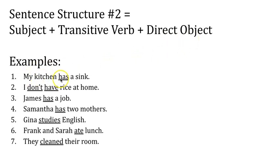For example: 'My kitchen has a sink.' 'My kitchen' is the subject, 'has' is the transitive verb, and 'a sink' is the direct object — the sink is what is inside my kitchen. In this sentence there are two nouns: 'kitchen' is the subject, and 'sink' is the direct object. We are explaining the relationship between these two nouns — the sink is inside the kitchen — and we show that connection with the transitive verb.